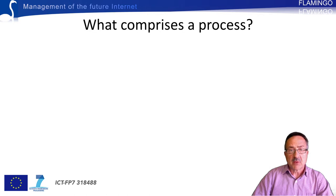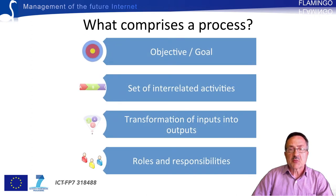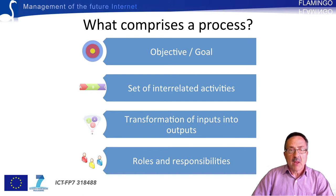The set of processes constitutes the core of the service management system. It is worth devoting a few words to better understand the structure of a process. Regardless of the problem domain that a given process is addressing, we can say that a management process has to specify four aspects: objective, constituting activities, inputs and outputs of the process, and the intervening roles and what these roles are each doing.